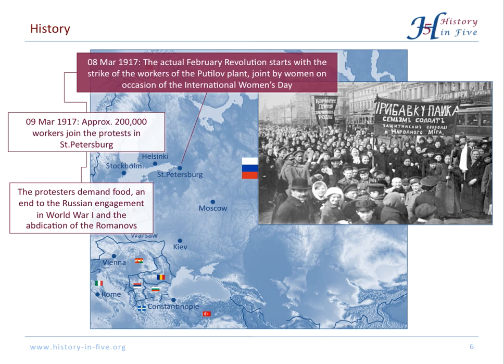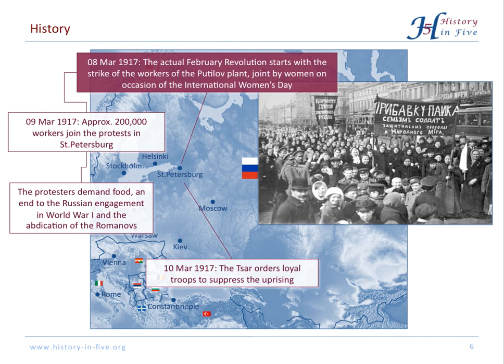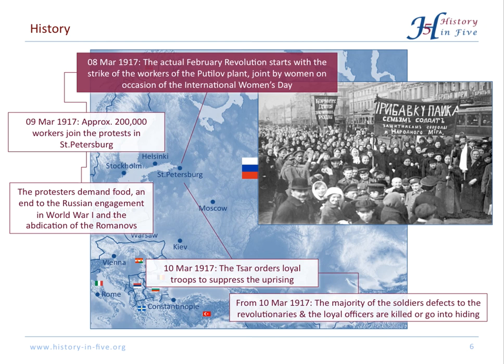The protesters demanded food and an end to the Russian engagement in World War I. Furthermore, they wanted the Romanovs, the family of the Tsar, to abdicate. The Tsar ordered loyal troops to suppress this uprising, but this didn't go well whatsoever, because the majority of the soldiers just changed sides and loyal officers were either killed or fled.